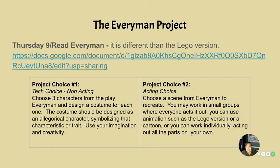You have two choices this time for a project. You can do a non-acting tech choice or you can do an acting choice. The tech choice would be choosing three characters from the play Everyman and designing a costume for each one. A costume should be designed as an allegorical character symbolizing that characteristic or trait. Use your imagination and creativity.